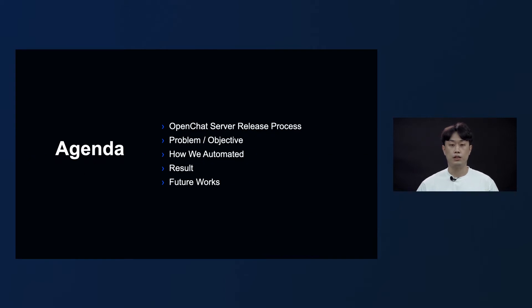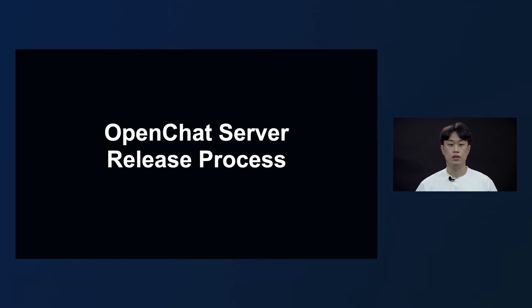First, I will explain the OpenChat Server release process, the problems of the as-is process, and the objective we wanted to achieve through automation. Next, I will explain how we automated each part and the result, and lastly, share our future works.